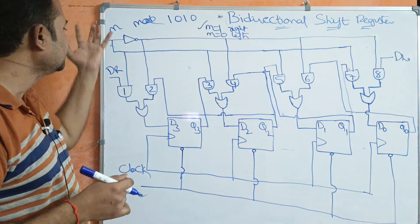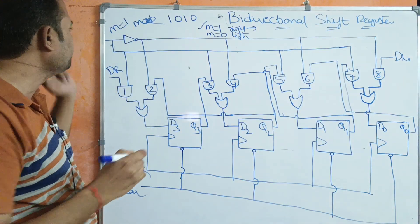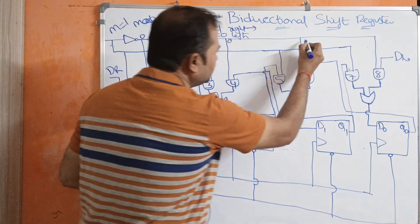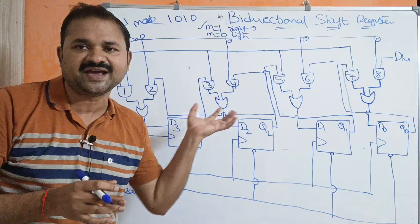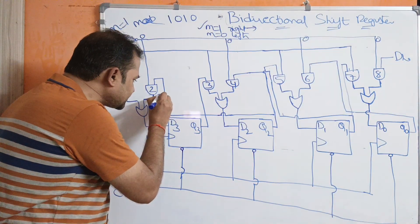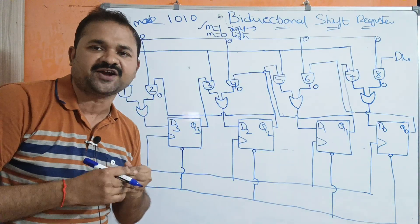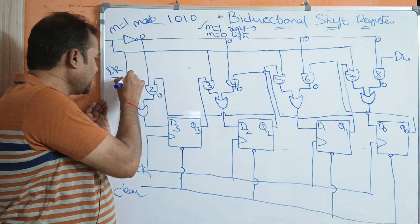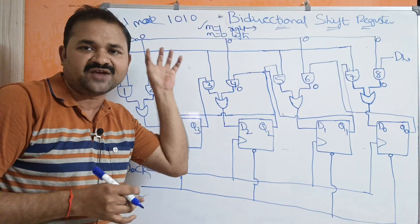For shift right operation, M value is 1. If M is 1, then the complemented line represents 0. Since 0 AND anything equals 0, the even-numbered AND gates all output 0. The odd-numbered AND gates — 1, 3, 5, and 7 — accept input from the actual line (M=1). So the shift right operation proceeds using odd-numbered AND gates receiving 1 from the actual line.